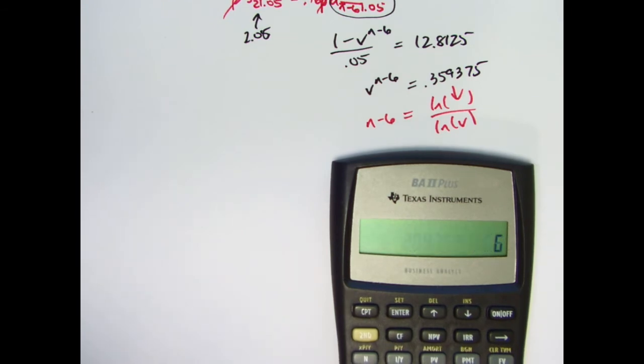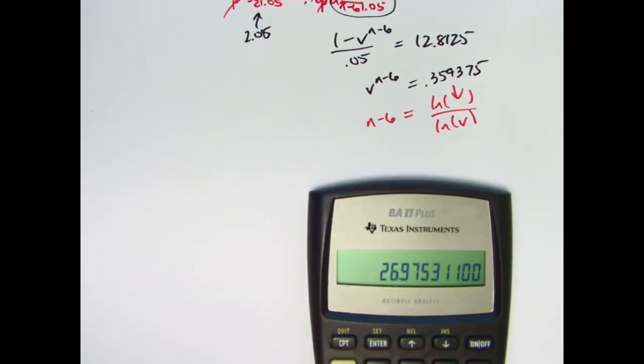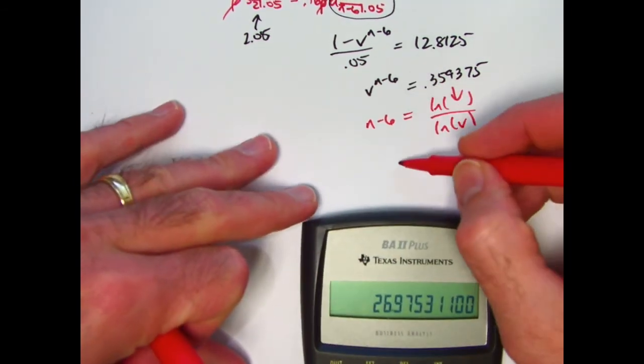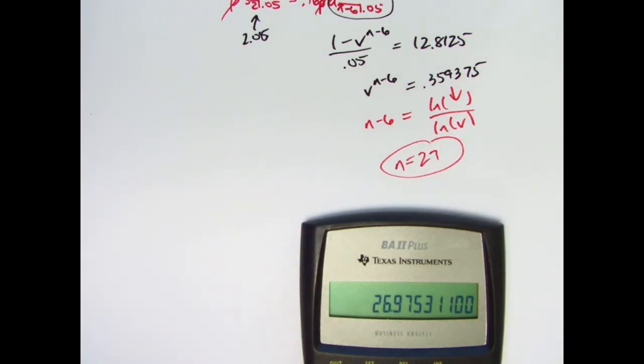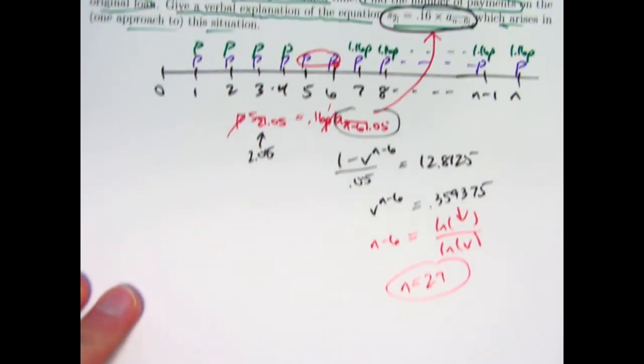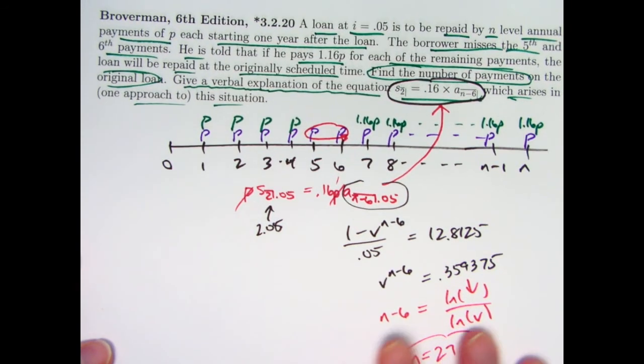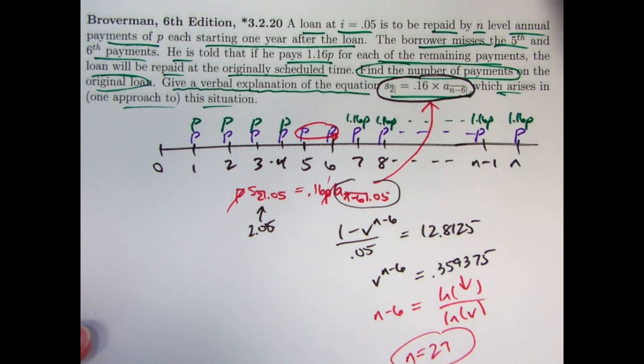Add 6 now to find n. And yeah, we did not get a whole number, but close enough that I believe the answer is 27. Indeed, I checked it with my answer key. That is the right answer. 27 years was the original payment plan. Thank you.